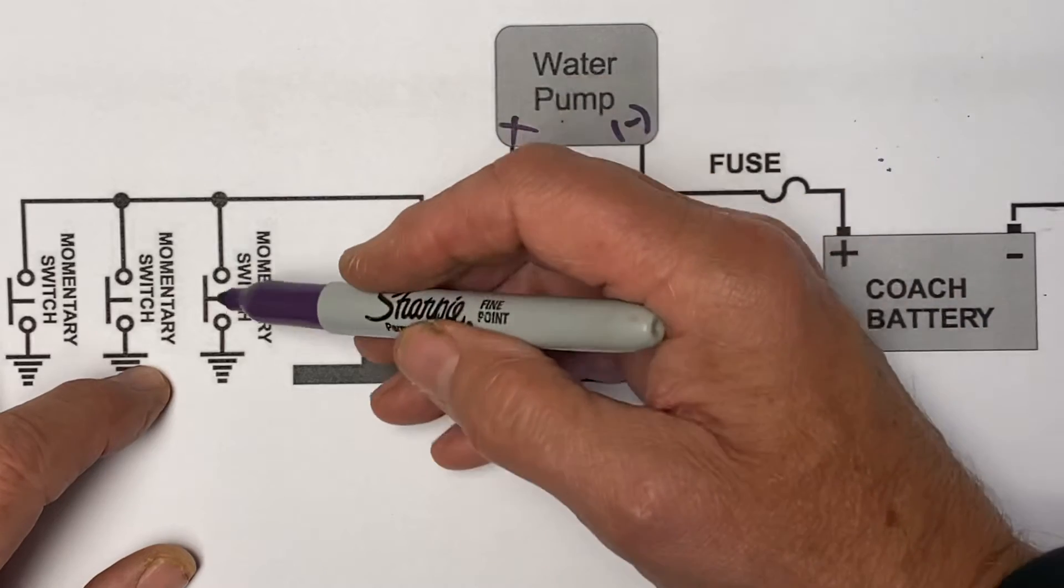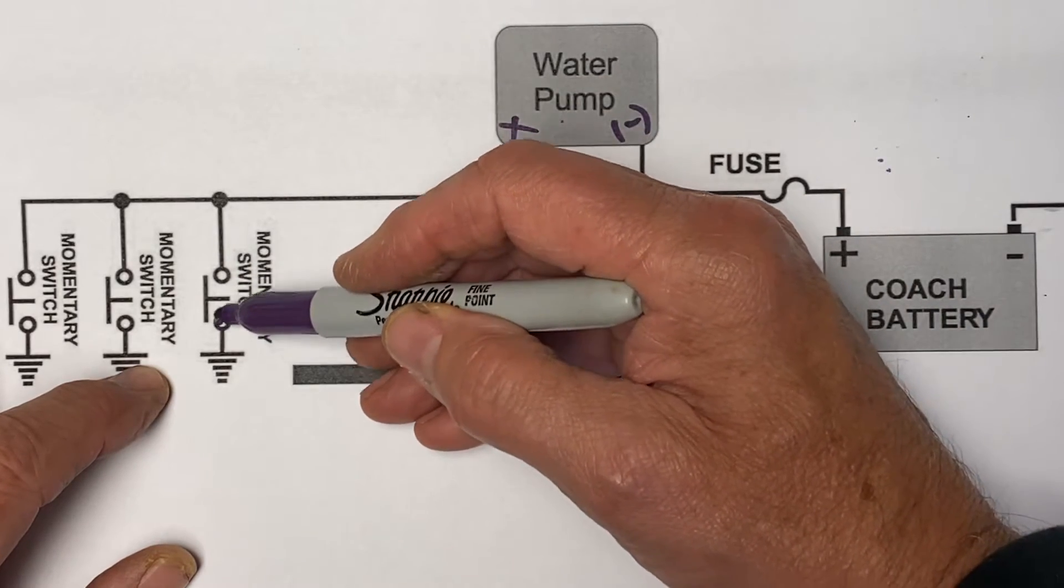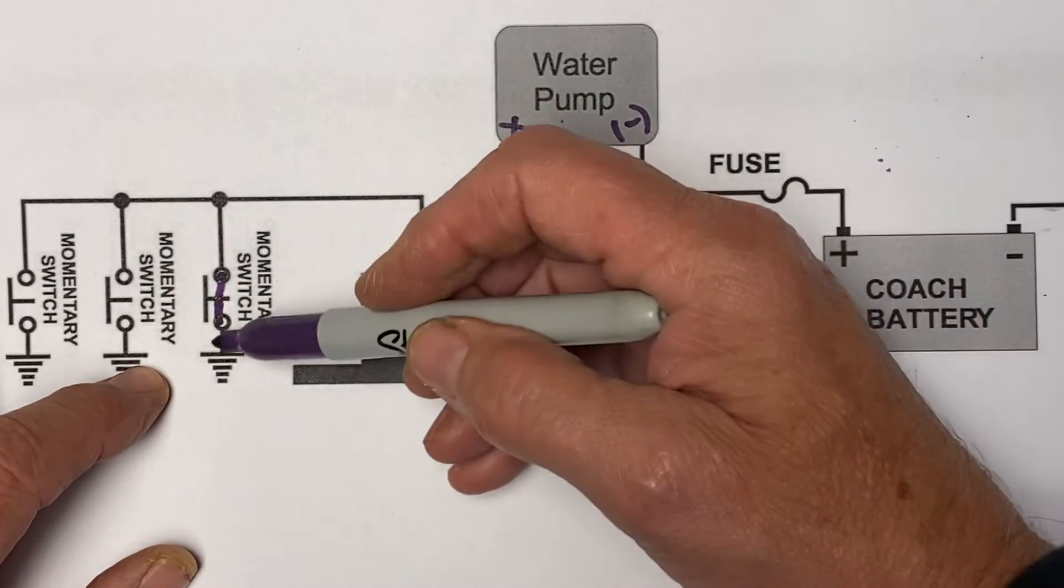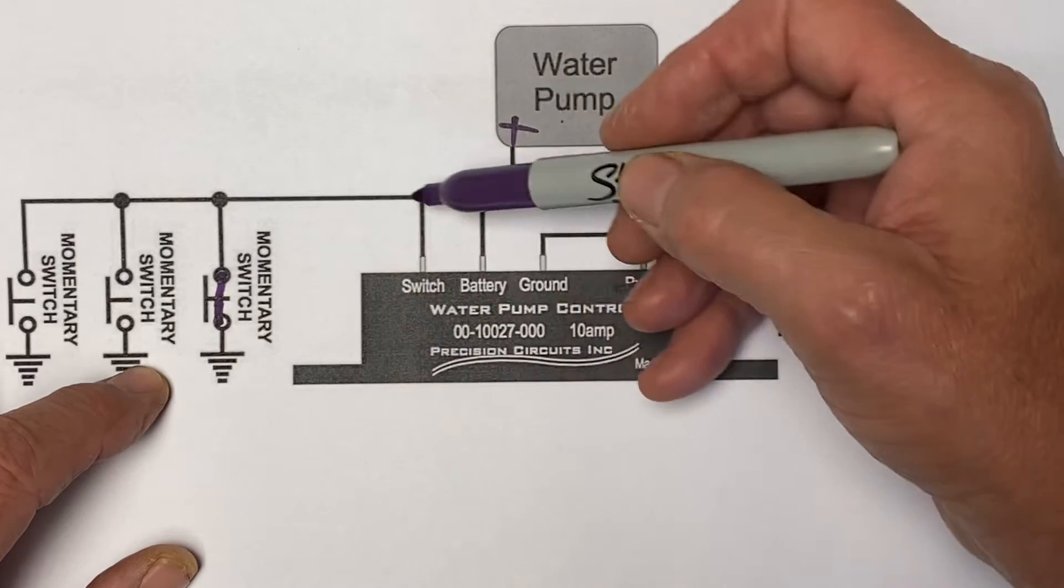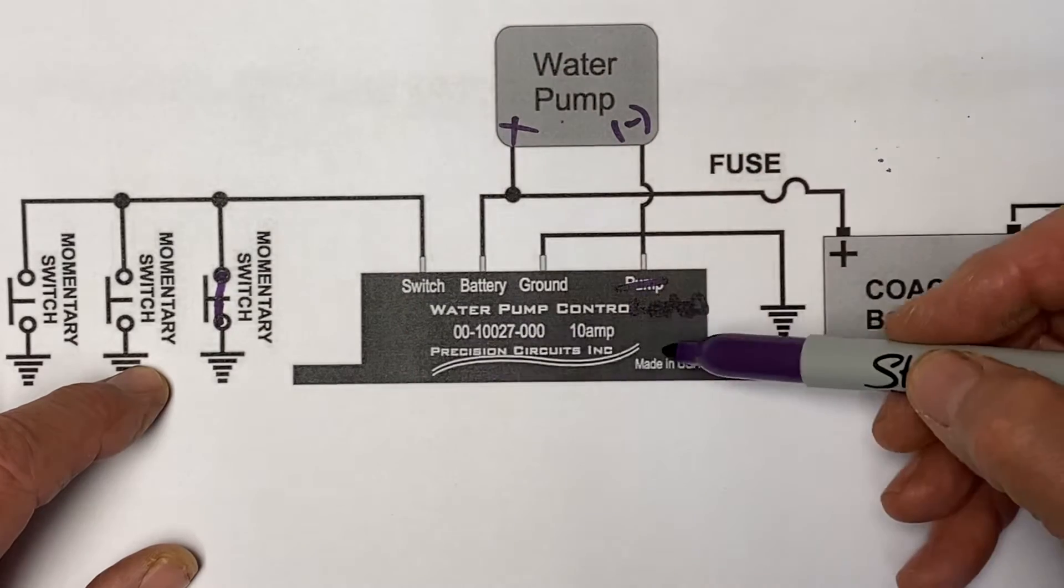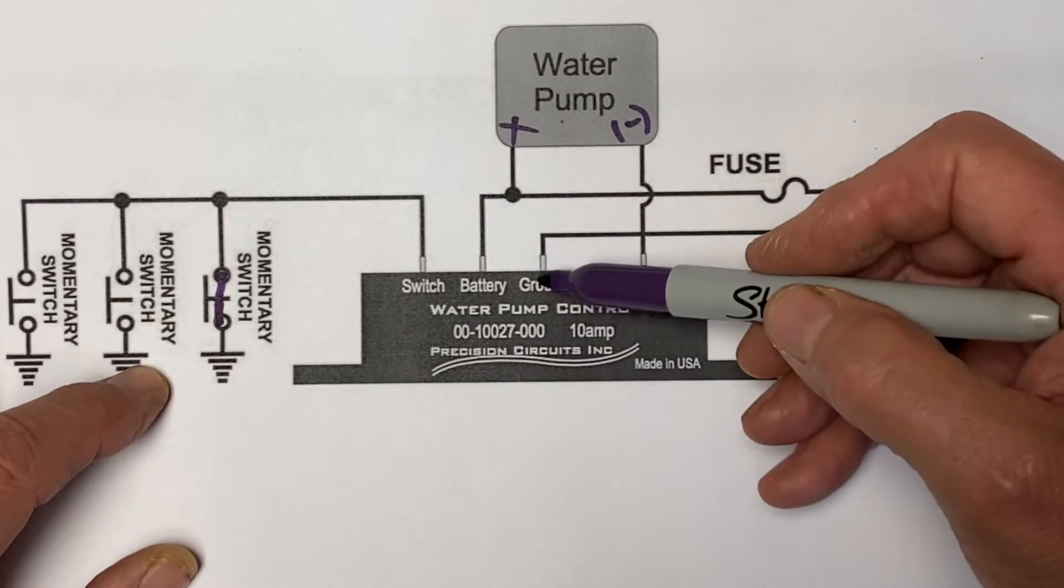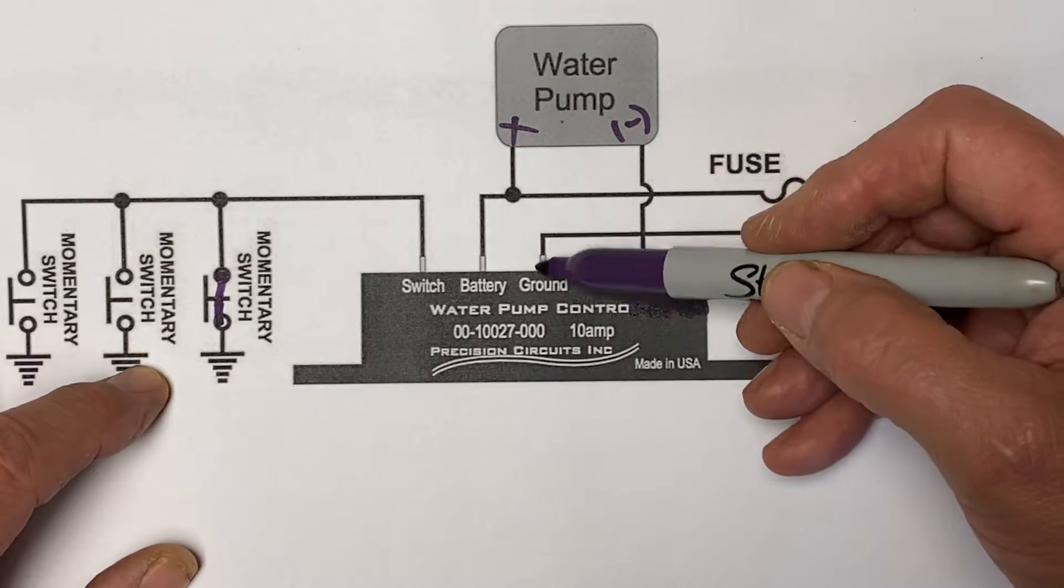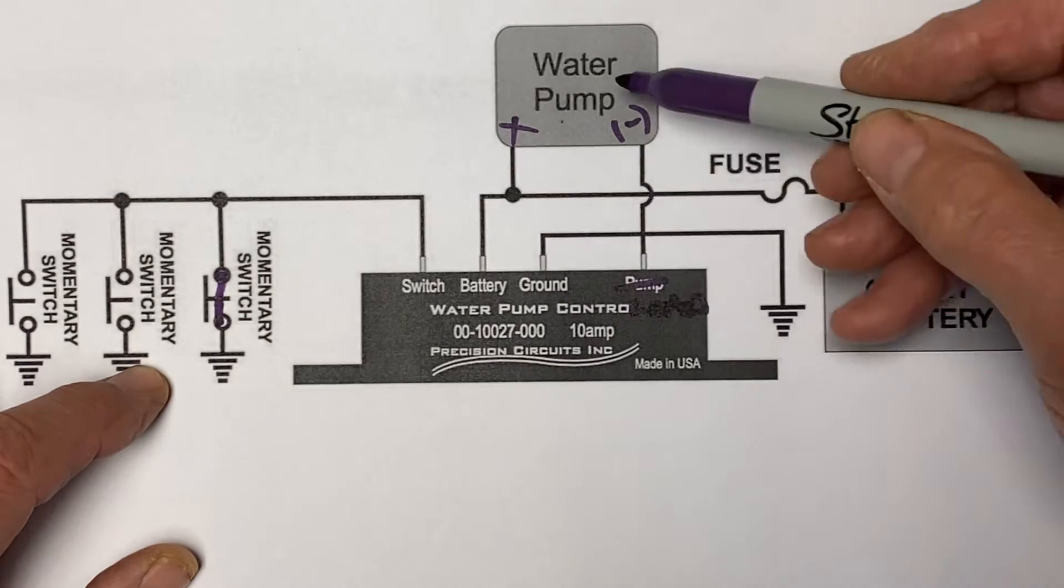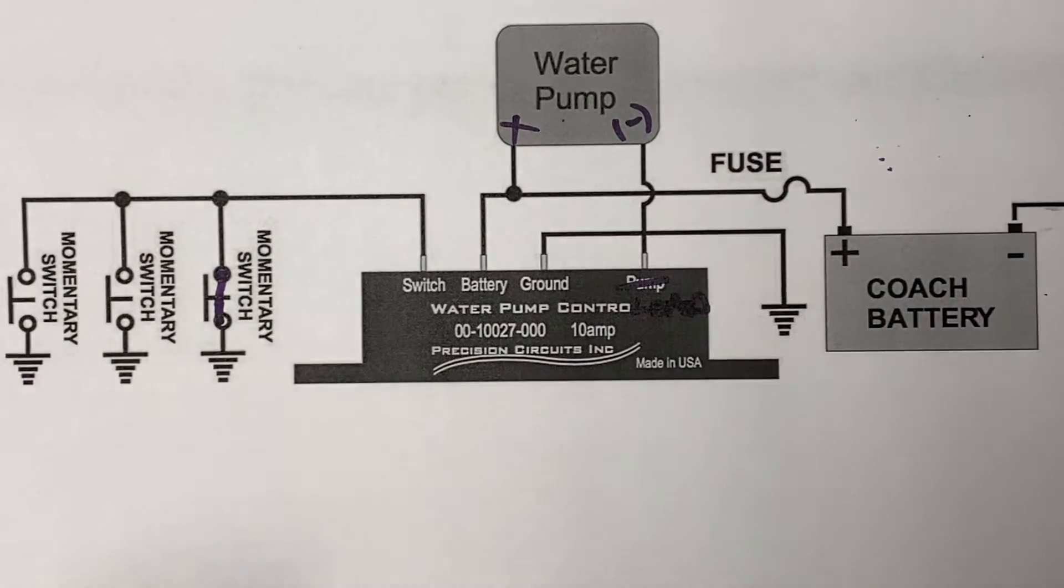So, when you push the momentary switch, it connects the ground to the circuit, triggers the relay to connect the circuit between the ground and the load, and the water pump comes on. It stays latched.